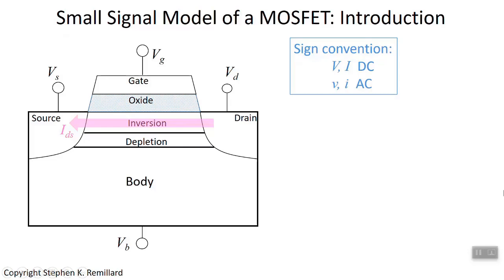Over the next several lectures, we will develop an IV — a current-voltage model for a MOSFET — which will include modeling the charge in the inversion layer and accounting for such features as velocity saturation, parasitic resistance, and high frequency. This is going to take a little bit of time, and this lecture is just the introduction. What I'm going to do right now is get some terms and concepts in front of you that are involved in modeling a transistor.